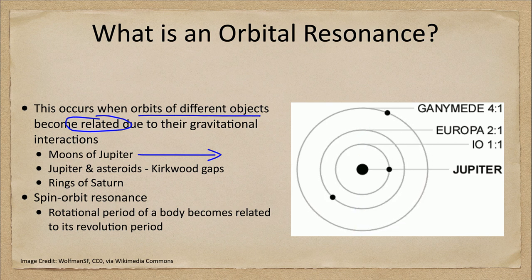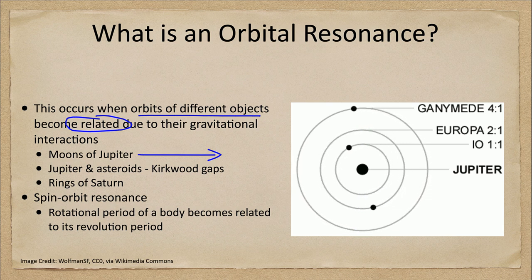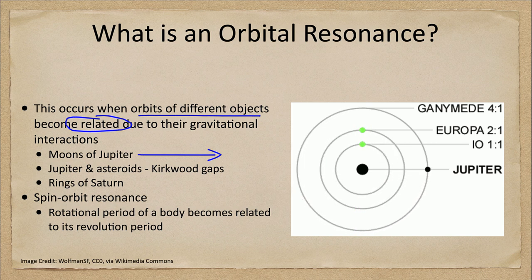Those are the next three moons out. If you watch their orbits, they're not just random relative to each other. You'll see that flash of green with Io and Europa that occurs every other orbit of Io. So Io orbits around twice and each time Europa orbits once, so every other orbit they will be lined back up and you will see that green flash.